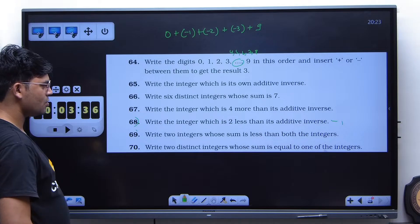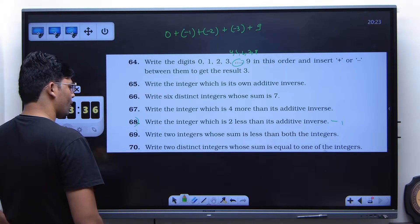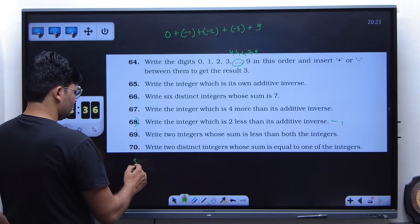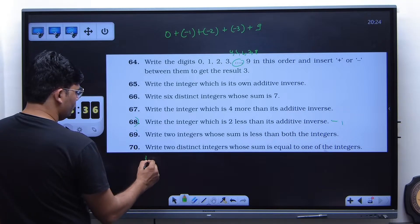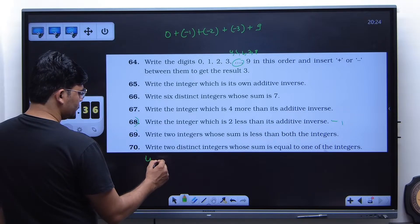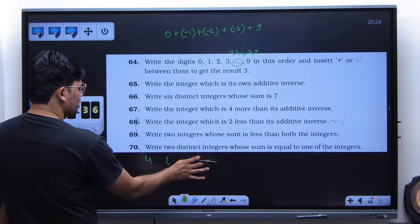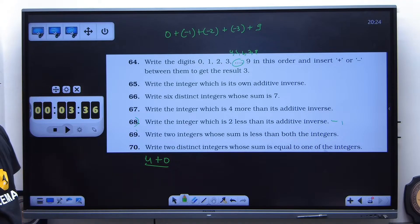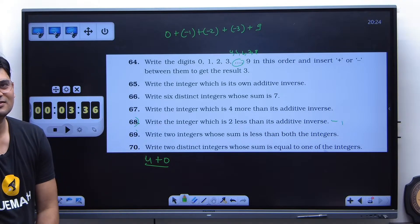Eight minus 4. No. Sum, okay. 4 and negative. You can say 4 and 0. Yeah. Where sum is equal to one of the integers, 4? Yeah.